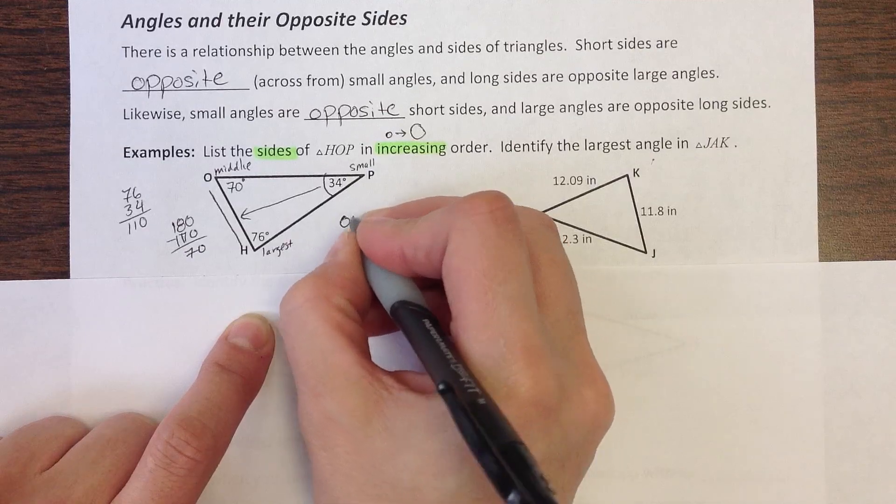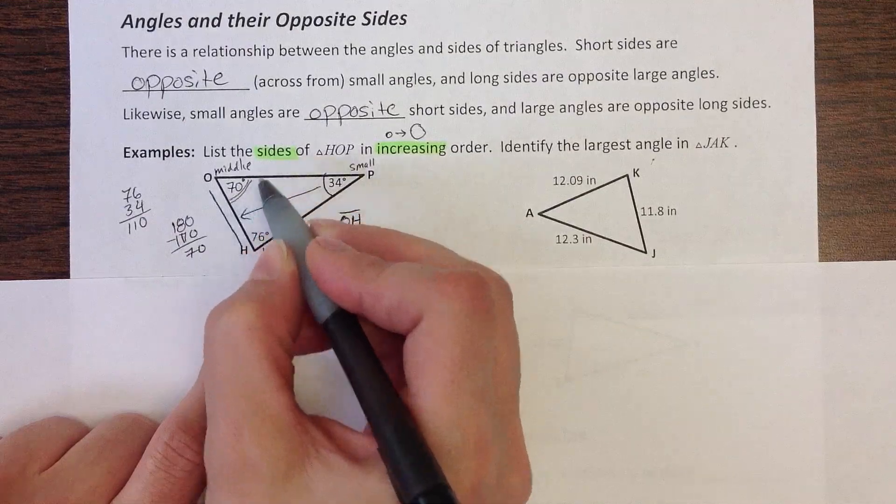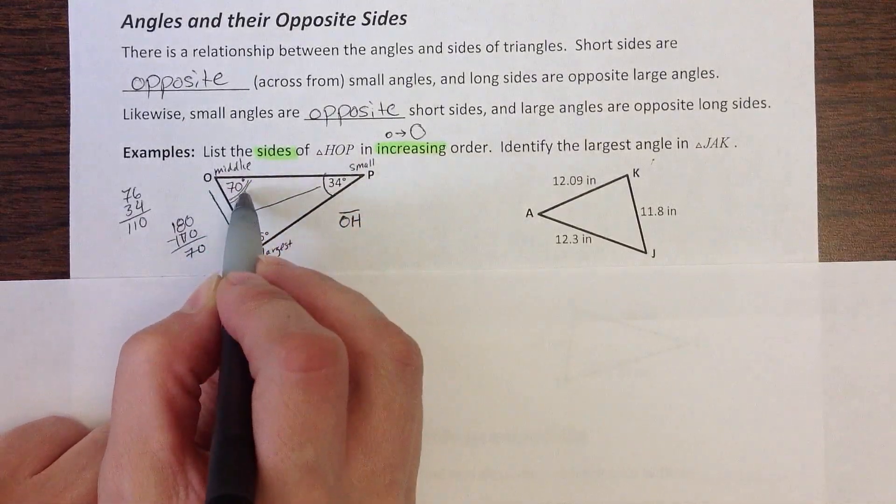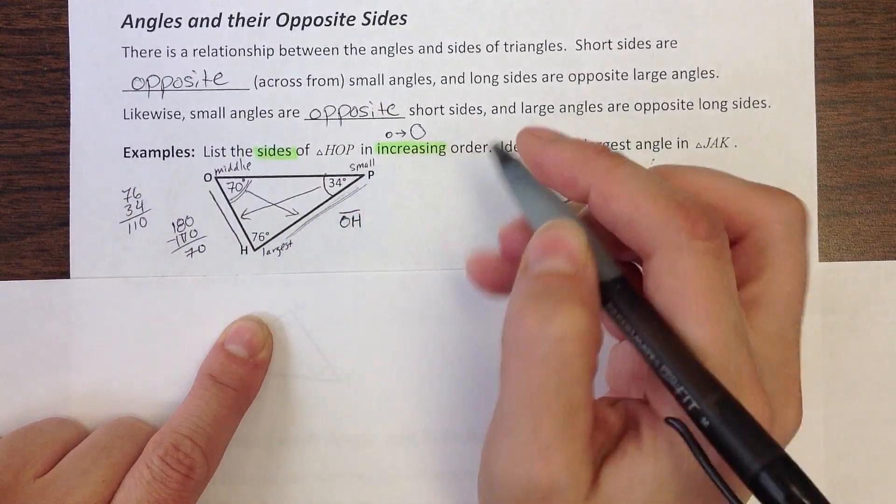So OH is going to be my smallest side. My middle angle here was at O. If I go opposite angle O, I find this side here, HP.